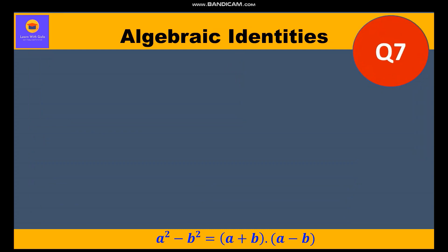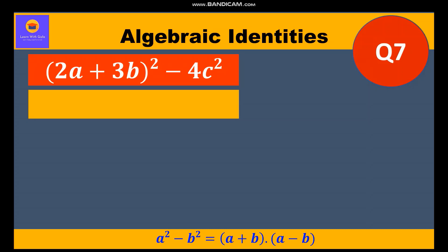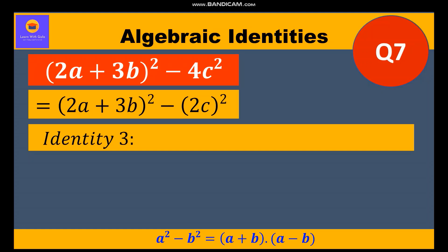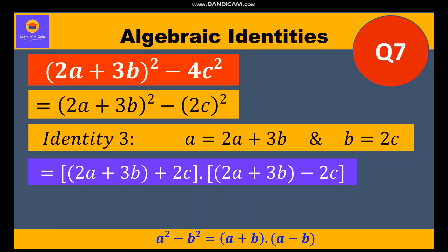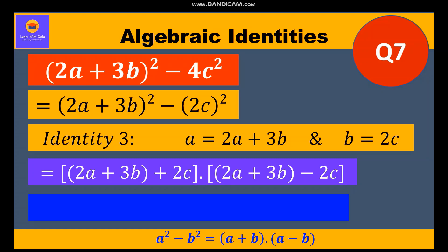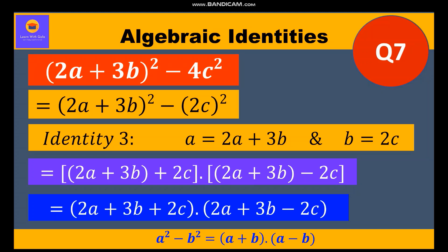Now let's move to the seventh question: (2a + 3b)² - 4c². We write (2a + 3b)² as it is, and 4c² = (2c)². This is Identity 3 where a = (2a + 3b) and b = 2c. Substituting and opening brackets, we get the two factors: (2a + 3b + 2c) and (2a + 3b - 2c).